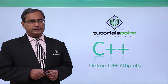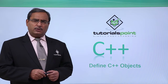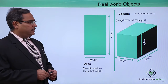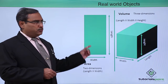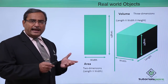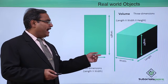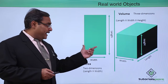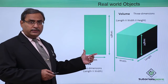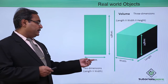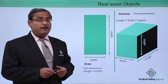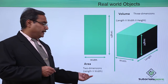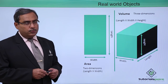We will define C++ objects. First, let us consider what real-world objects are. Consider a land plot which has width and length. If we define one class against this particular real-world object, we shall keep width and length as its variables. To calculate the area, we use the formula: two-dimensional area equals length into width.